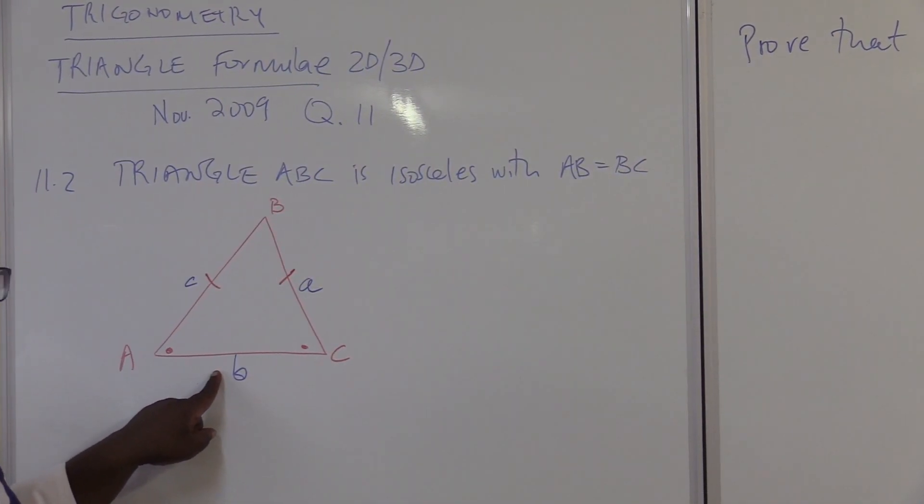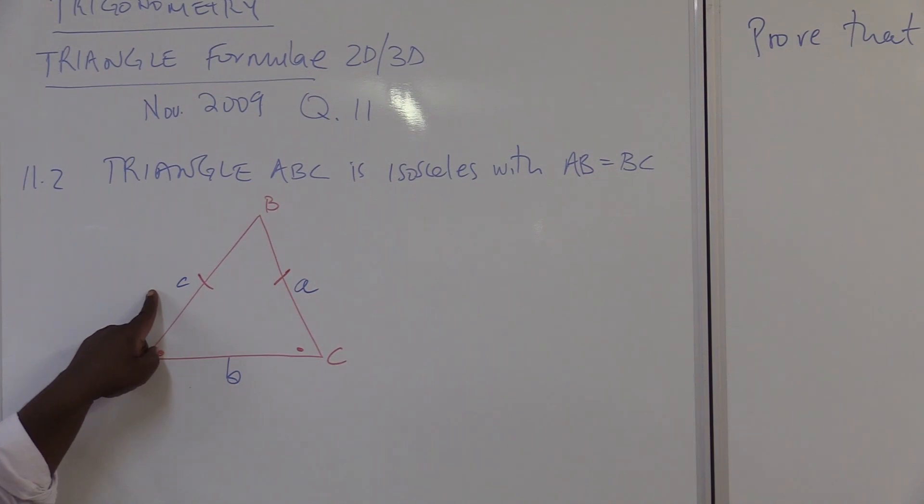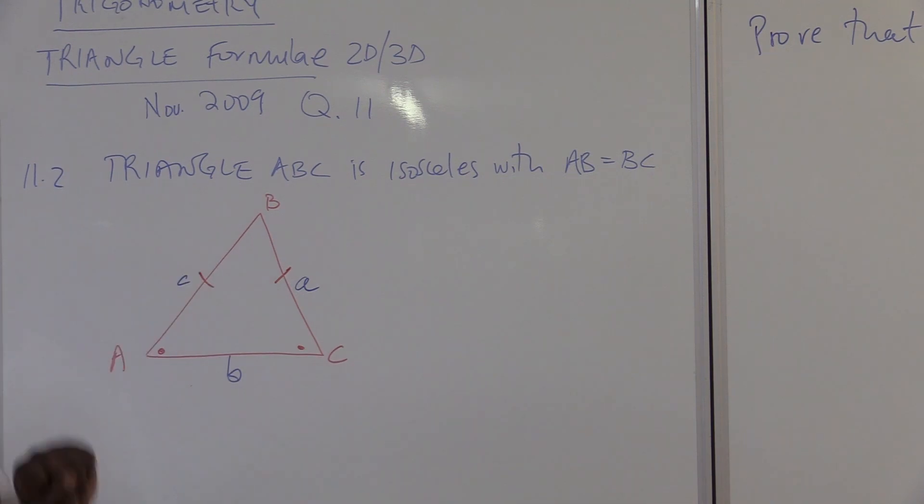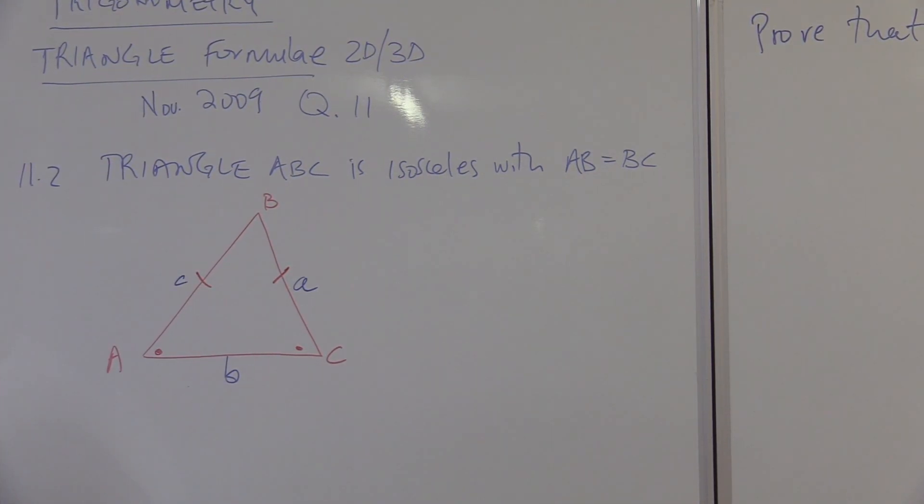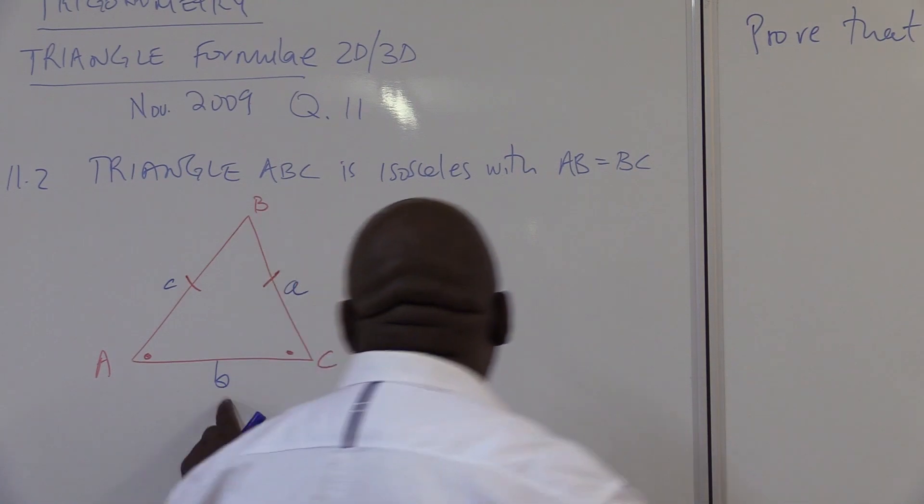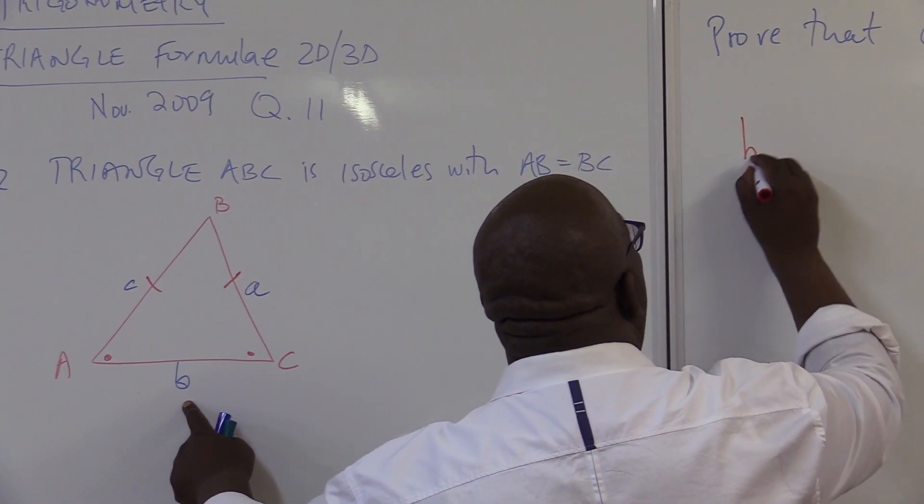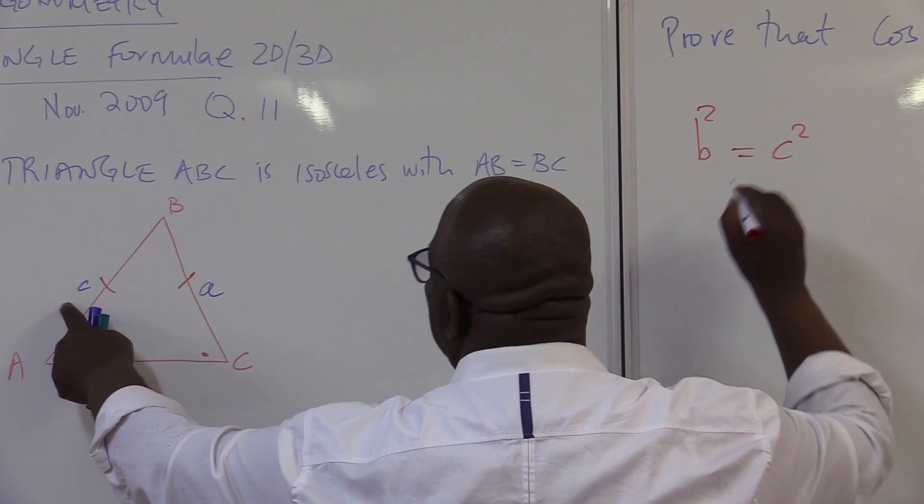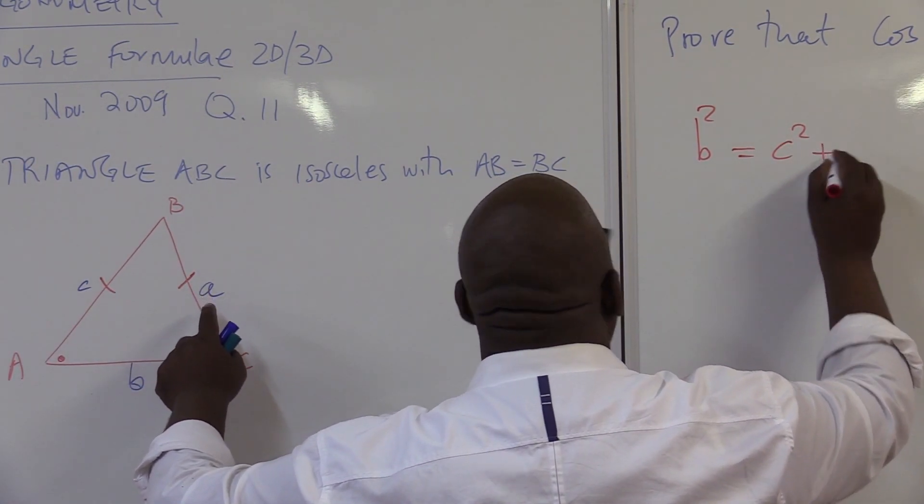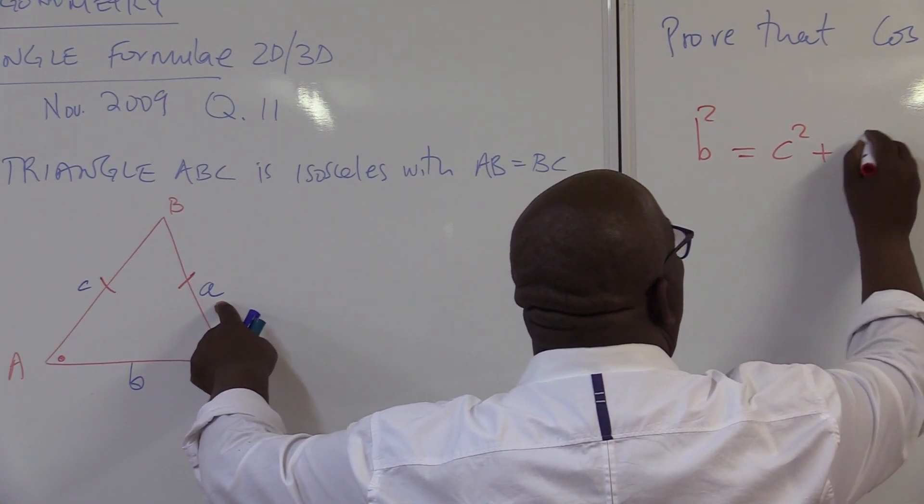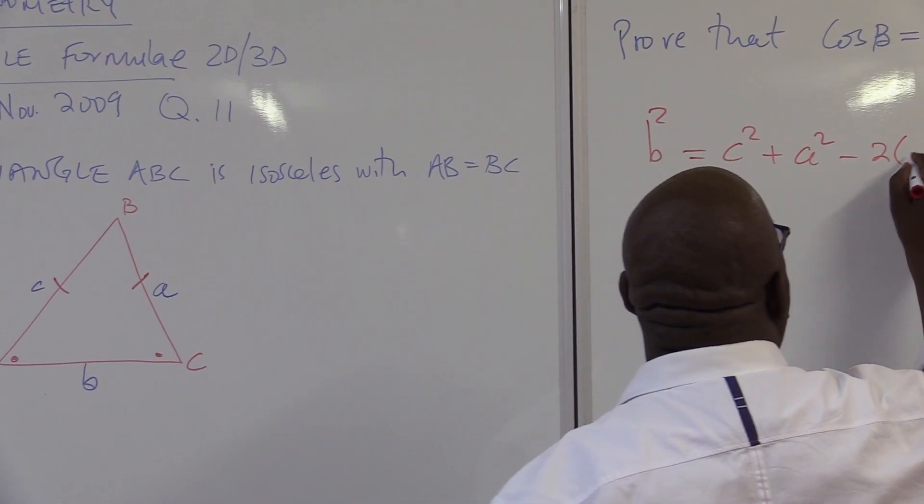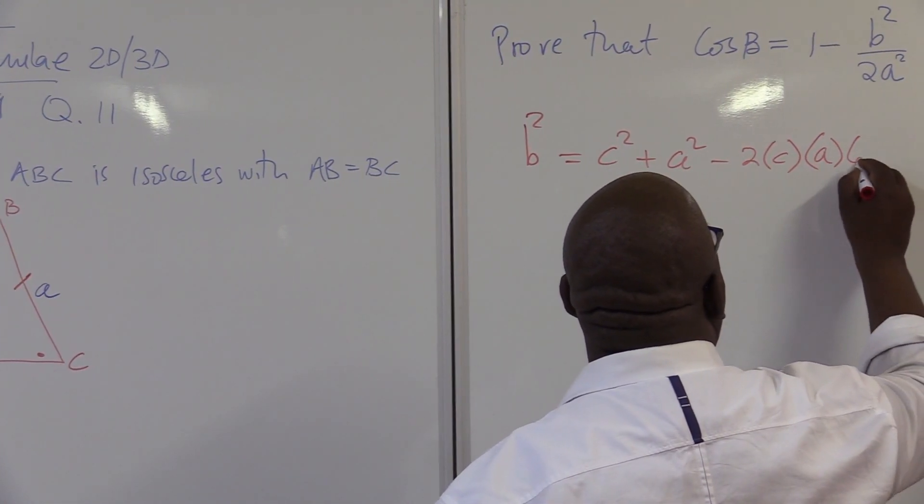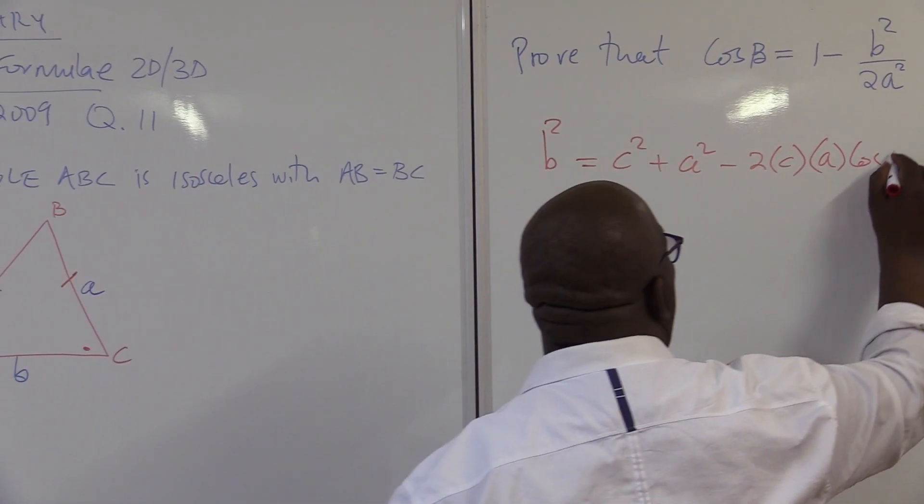This side squared is equal to little side squared plus this side squared minus 2 of this side times this side cosine of the angle. When we write that down, this side squared, which is B squared, is equals to this side squared, which is C squared, plus this side squared, which is A squared, minus 2 of the first side, which is C, times the second side, which is A, cosine of the included angle, in this case, which is B.